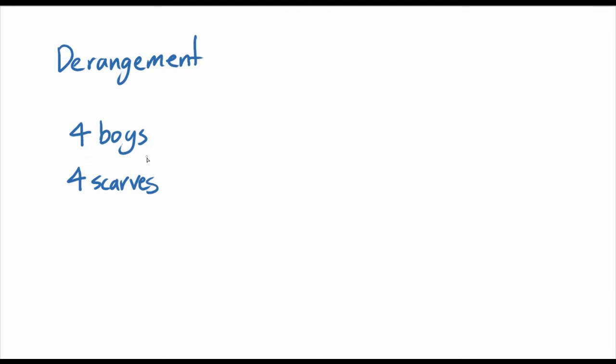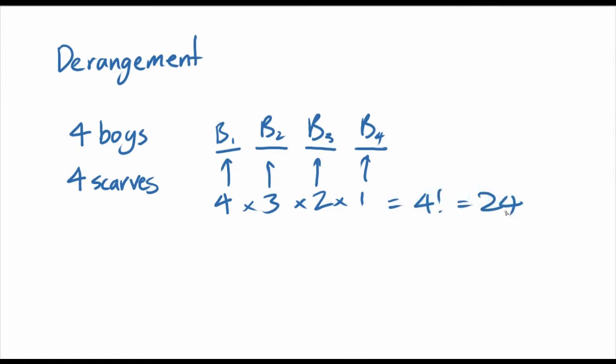Well, with the first scarf, you can choose four boys to give it to. Three can go to this boy because this scarf was taken by boy number one, so there's three scarves left. Boy two can choose from three of them. Boy three can choose from two of them. Boy four can choose from one of them. So essentially, of course, this is basic counting. That's four factorial, which is 24. So there's 24 ways you can give four distinct scarves to four distinct boys.